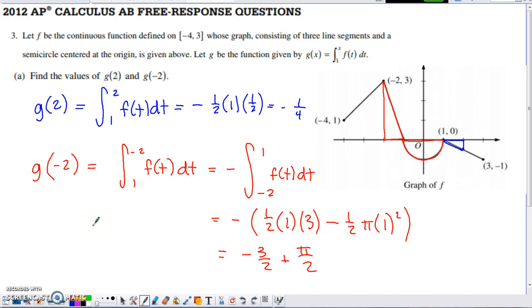In the second part, we want to evaluate G of negative 2. So I toss negative 2 in place of the X in G, and I end up with this situation. 1 is my lower limit, negative 2 is my upper limit.